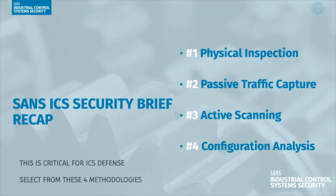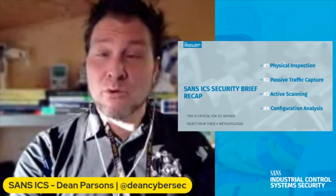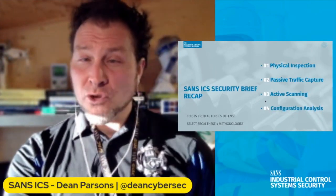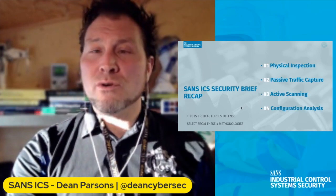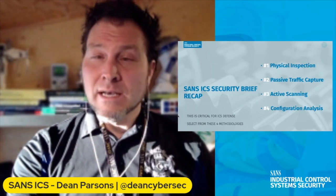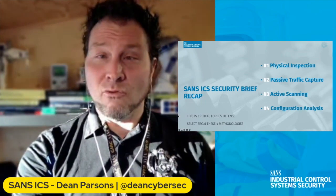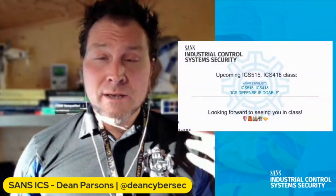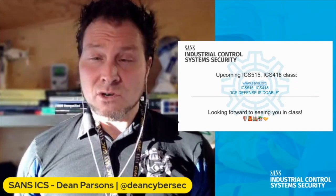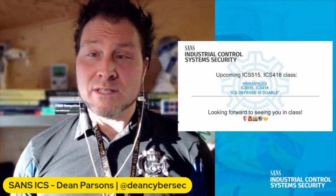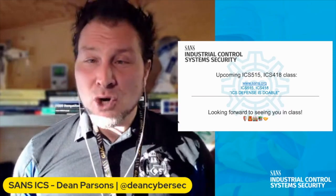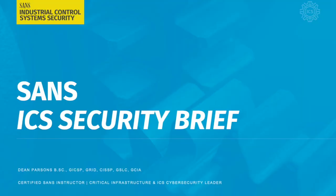To recap today's SANS ICS security brief: the four main methodologies for asset inventory in your ICS are physical inspection, passive traffic capture, active scanning, and configuration analysis. Pros and cons exist for each — it's up to you to decide what works for your security and safety teams. You can also combine these together to get more accuracy and balance cost and initiative. Thank you for your time. My name is Dean Parsons, I'm a certified SANS instructor — I teach ICS 515 and the new ICS 418. ICS defense is totally doable, and I hope to see you in class soon.